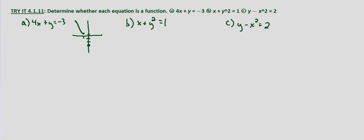We have a line that goes through those two points — that's a visual representation of that equation. As you can see, a line is a function. For every input there's only one output; for every x value there's only one y value. We can also go ahead and solve for y. If we subtract 4x from both sides, we get y equals negative 4x minus 3. That represents a line with a slope of negative 4 and a y-intercept of negative 3, which is what we've sketched the graph of — it's not a proper graph, but it's a visual representation.